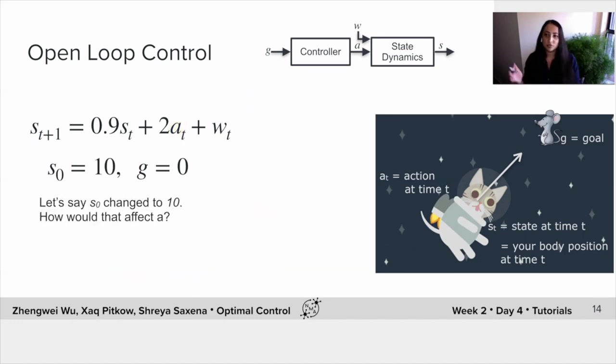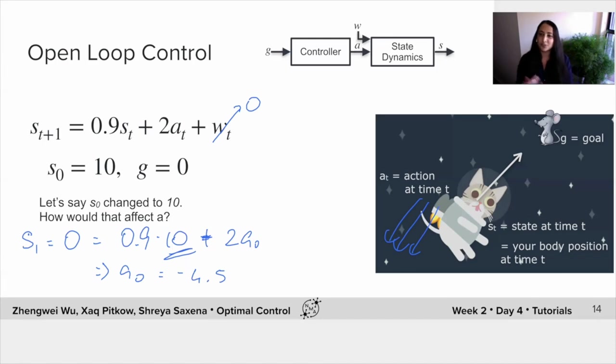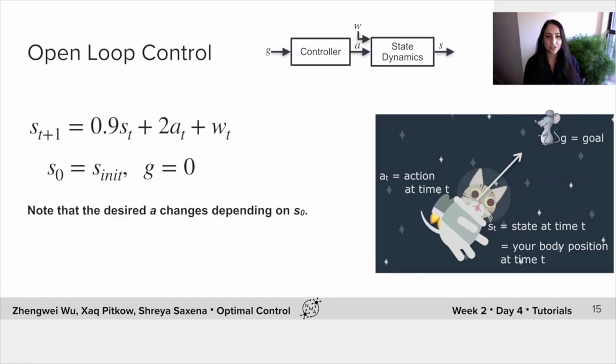So what happens now, if s0 actually changes? So let's say you're further away from your goal, because you've been displaced further, how would that actually affect your action? Well, it's easy to find out, let's say you still want to get there in one time step. Right? This time, your desired state at time zero is a function of your current state. And we can just again, assume that this noise is negligible, and solve in order to get your optimal a zero is negative 4.5. So you'll see you'll just need to apply a much bigger action in order to get to the goal in one time step. That makes sense. Great. So you'll notice that the desired action actually changes depending on s0, the initial condition. This makes sense.